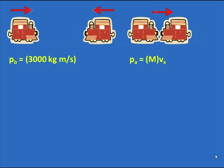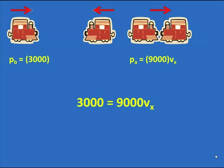So, I have the total momentum after that is 9,000 times the unknown velocity. Once again, it's a matter of setting these two equations equal to each other. The momentum to the left equals the momentum to the right. I solve for Vx. 0.33 meters per second to the right.